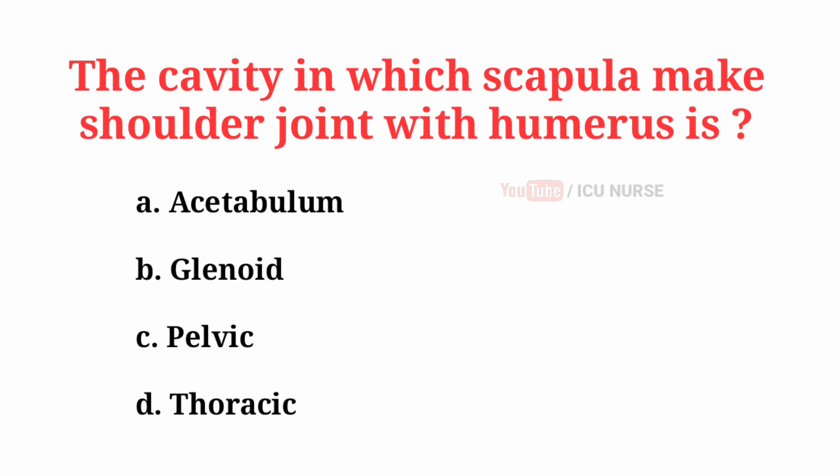The cavity in which the scapula makes a shoulder joint with the humerus is? The correct answer is B: Glenoid.